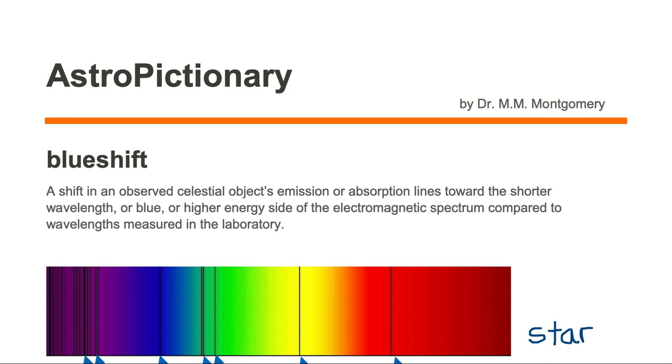Blue shift is a shift in an observed celestial object's emission or absorption lines towards the shorter wavelength, or blue, or higher energy side of the electromagnetic spectrum compared to the wavelengths measured in the laboratory.